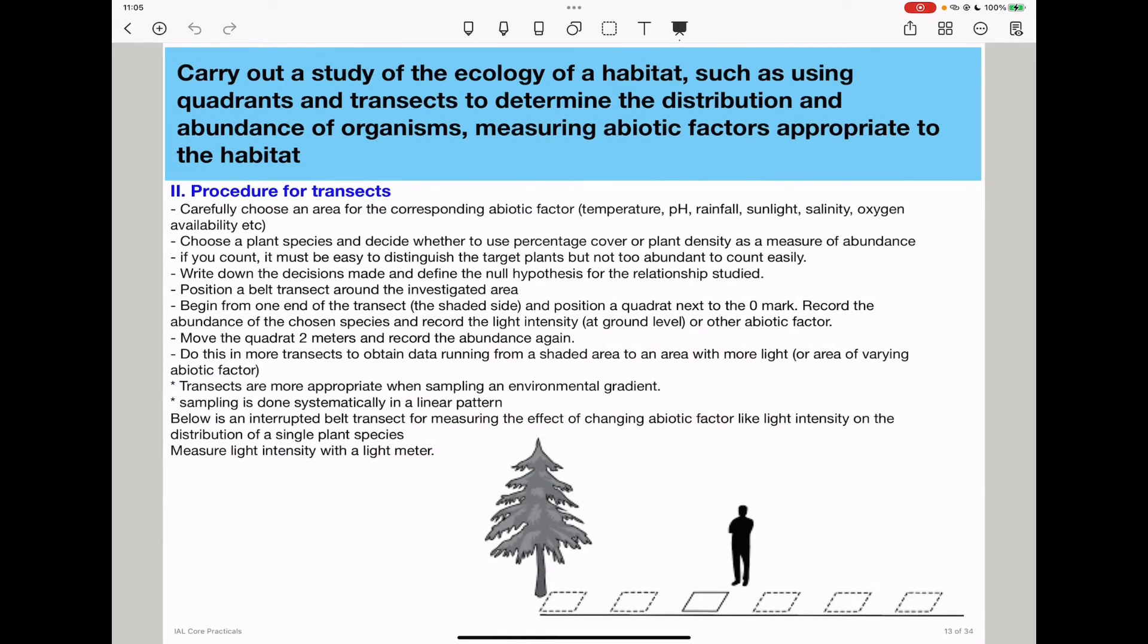In the next part, we carry out a study of the ecology of a habitat using transects to determine the abundance and distribution of organisms by measuring suitable abiotic factors as well. In my description here, we are using light intensity, but you could also use pH level, salinity, water content of the soil, and so on. You have to carefully choose an area with a corresponding specific abiotic factor. It could be temperature, pH, rainfall, sunlight, salinity, or oxygen availability. You have to choose a plant species and decide whether you are using percentage cover or plant density as the measure of abundance.